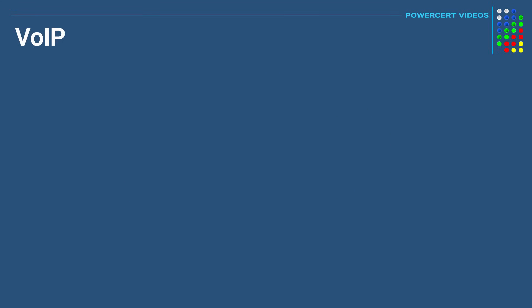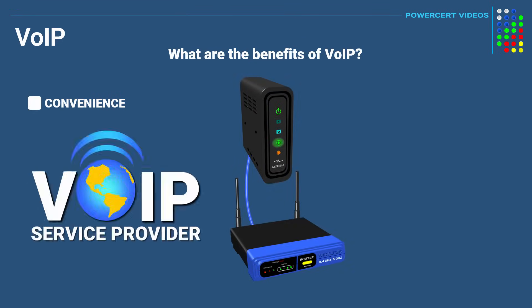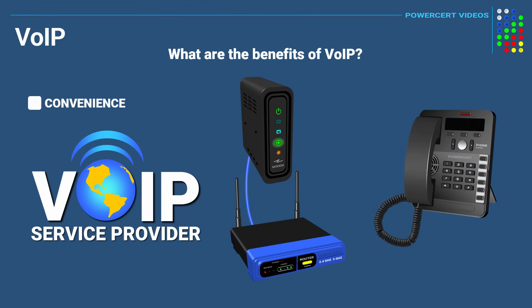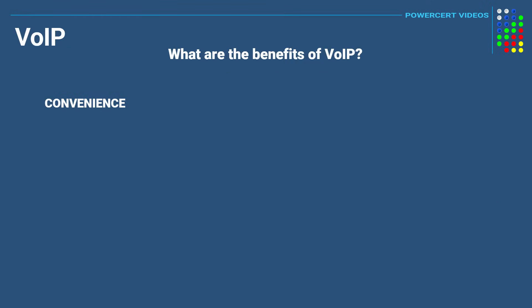So what are the benefits of VoIP? For one, convenience — you just need an internet connection, a VoIP provider, and a VoIP phone. And as mentioned, you don't even need a handset because you can use a softphone. That also leads to saving money.